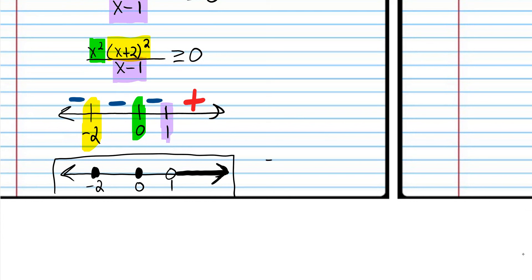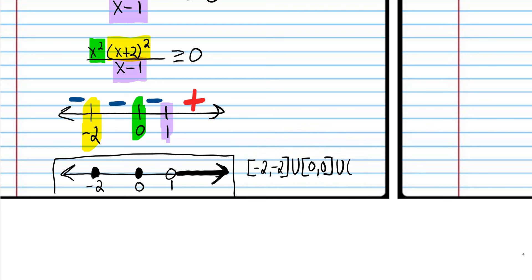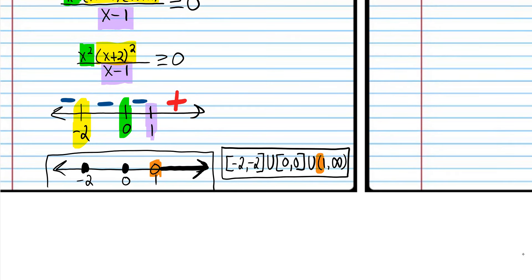The expression will be equal to zero when we plug in zero and equal to zero when we plug in negative two. So that's the graphical solution. In interval notation, we'd write negative two to negative two with brackets — even though that's not really an interval, that's how we write it. And then we write a parenthesis, one comma infinity. We write a parenthesis because we have an open dot there.